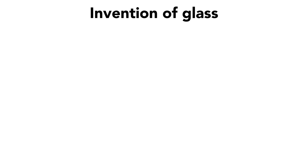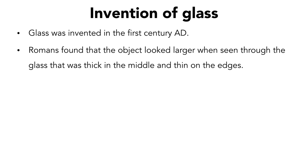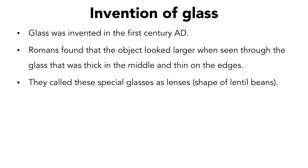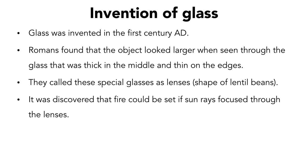Glass was invented in the first century AD by the Romans. They found that objects looked larger when seen through glass that was thick in the middle and thin on the edges. They called these samples glass lenses because the glass was the shape of a lentil bean. Someone also found that if sun rays were focused through the lens, one could start a fire.